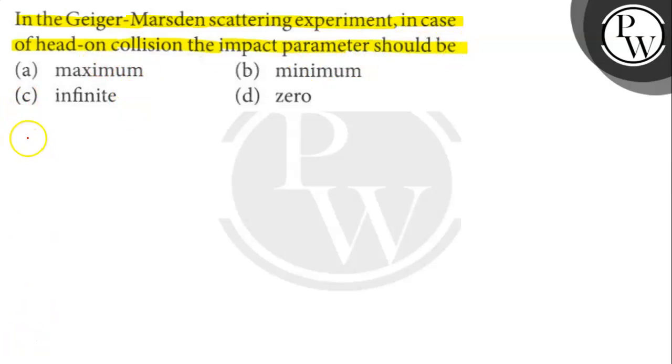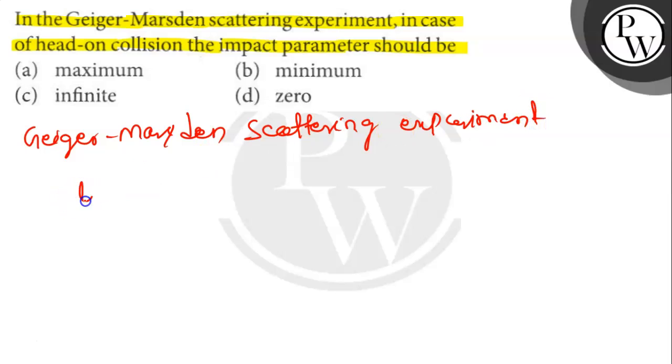Let's find out. In the Geiger-Marsden scattering experiment, log base 10 of lambda equals minus a1 times z divided by root e plus a2.